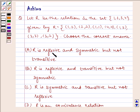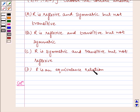(A) R is reflexive and symmetric but not transitive. (B) R is reflexive and transitive but not symmetric. (C) R is symmetric and transitive but not reflexive. (D) R is an equivalence relation.